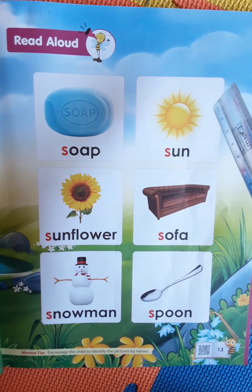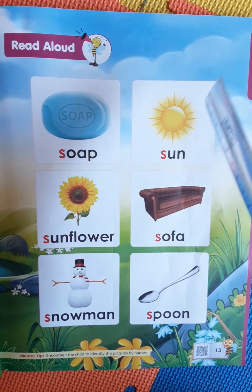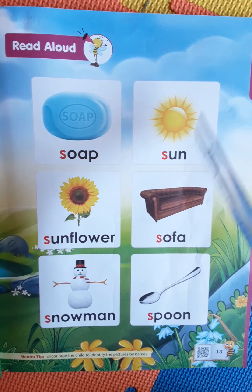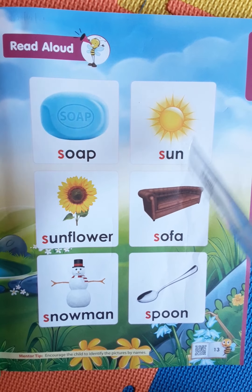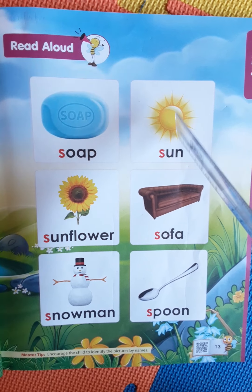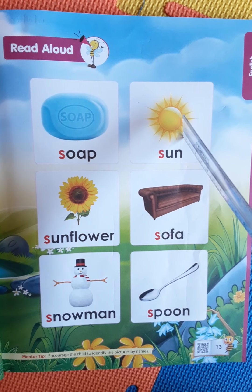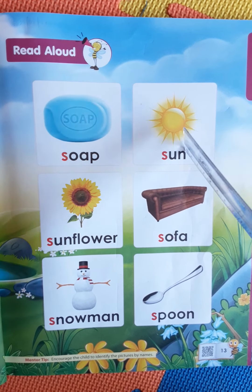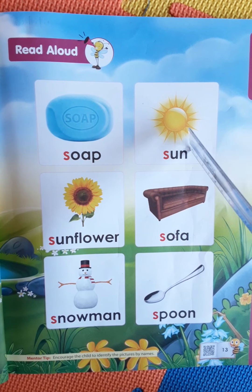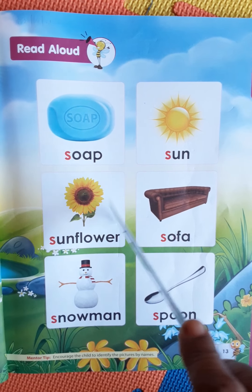S for sun. The sun rises in the morning and the sun sets in the evening. The sun is yellow in colour. When it sets it is orange in colour. What does the sun give us? The sun gives us heat and light. S for sunflower.